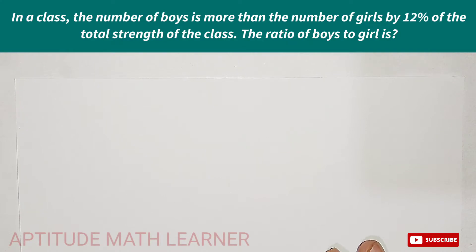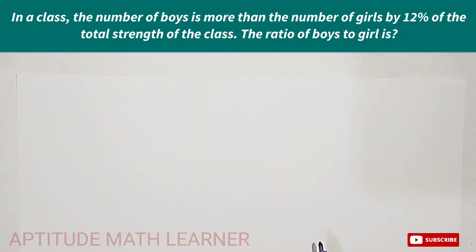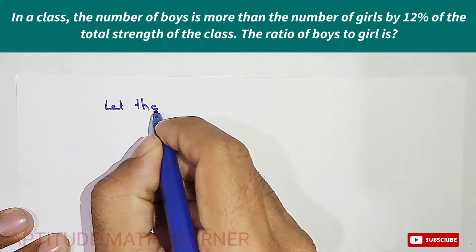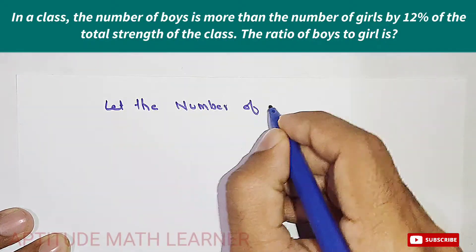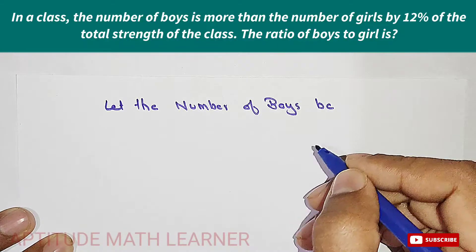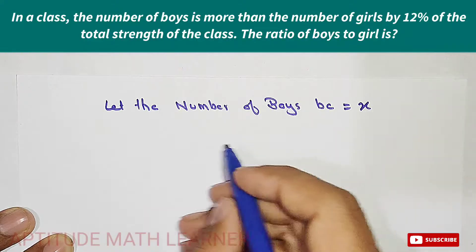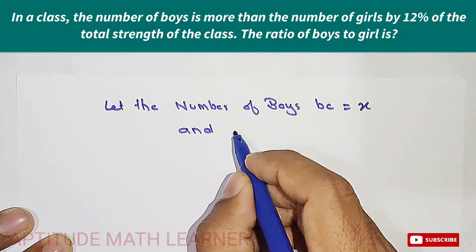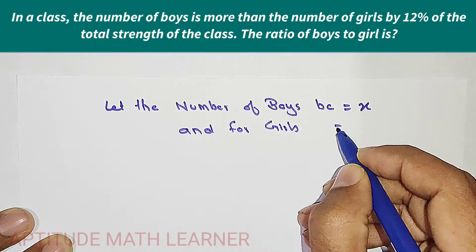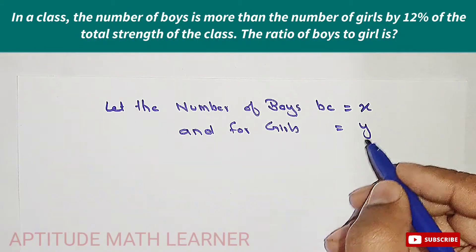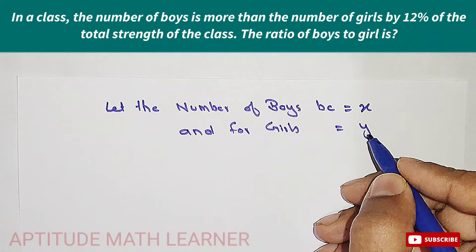First, let's understand the question. We are not given the actual strength of boys and girls, so we let the number of boys be x and the number of girls be y.